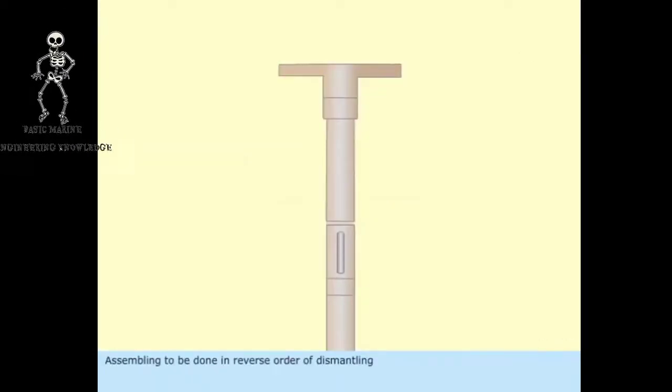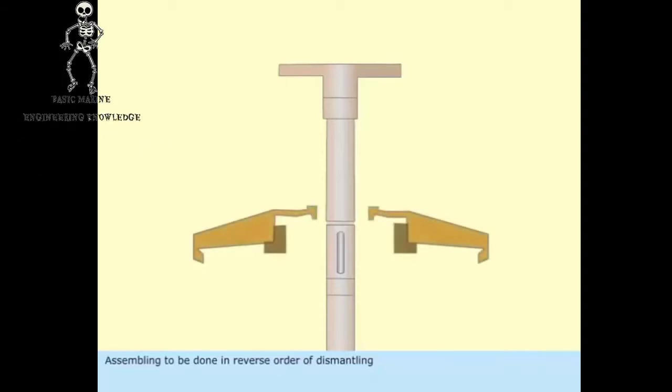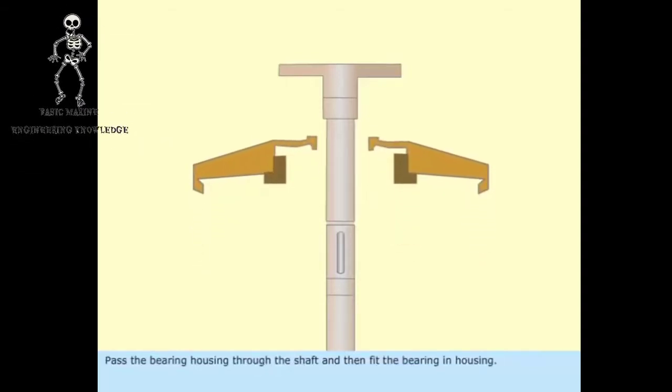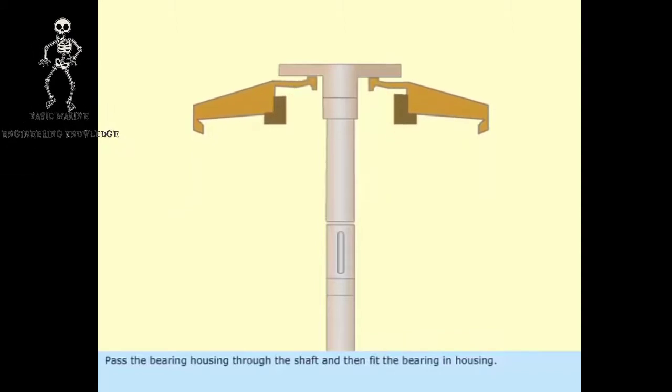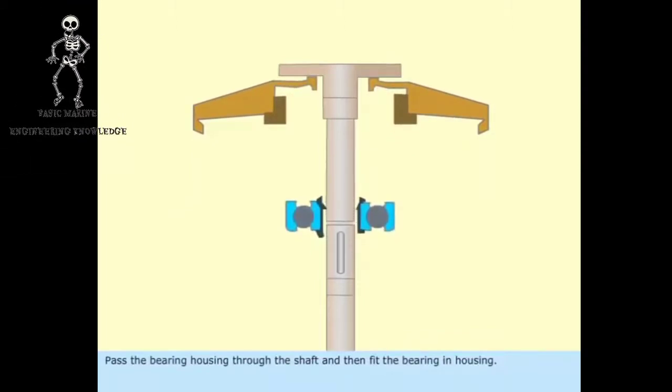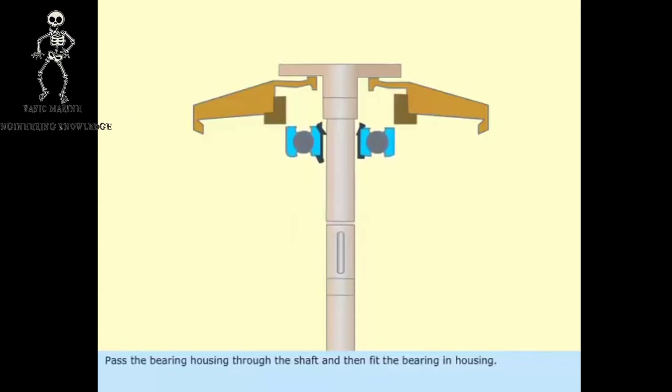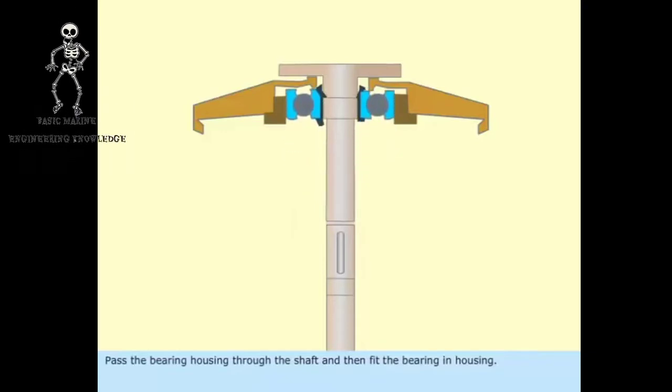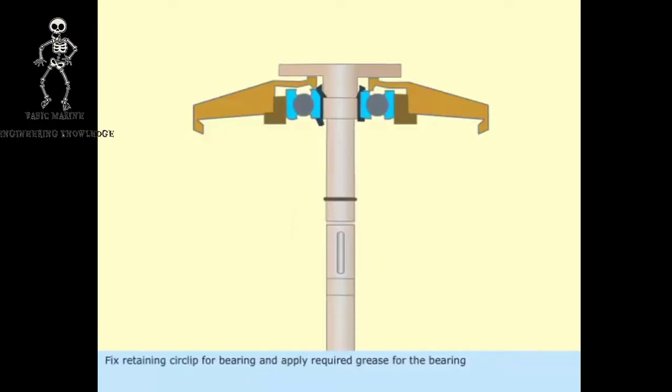Assembling to be done in reverse order of dismantling. Pass the bearing housing through the shaft and then fit the bearing in housing. Fix retaining circlip for bearing and apply required grease for the bearing.